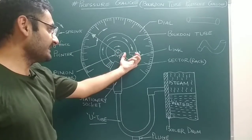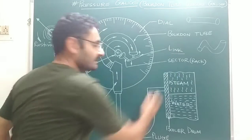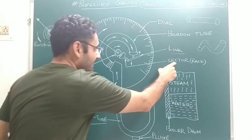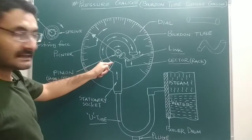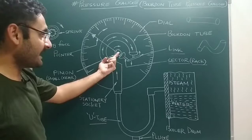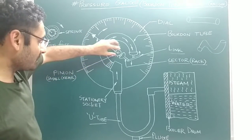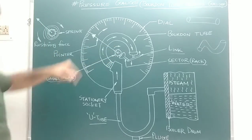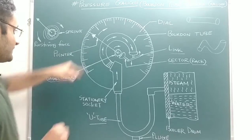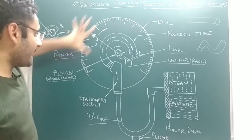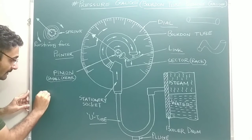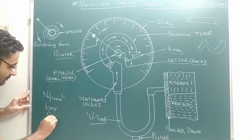The Bourdon tube is connected with one link. That link can move in the upward as well as downward direction. The link is connected with one sector. On one side of the sector some teeth are constructed, so that sector acts as a rack — like a rack and pinion. That rack is connected with one small gear, also with teeth, known as the pinion. The pinion is connected with a pointer, which is located on a dial with pressure markings in N/mm², bar, or pascal.